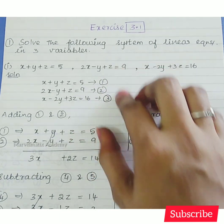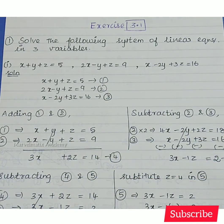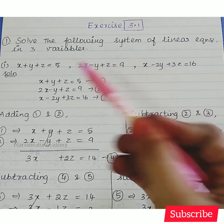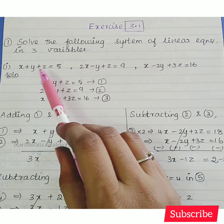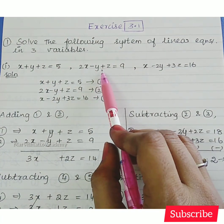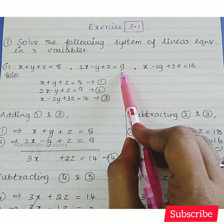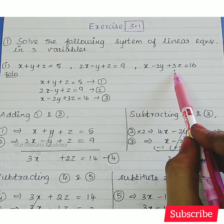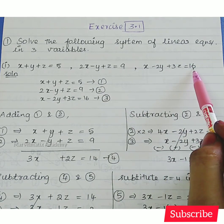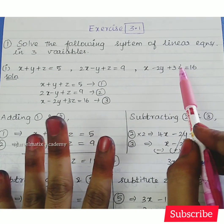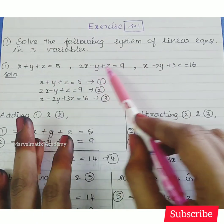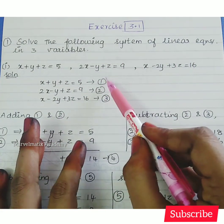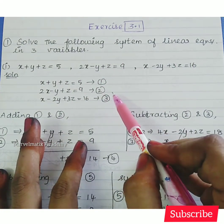Let's see the first question. The three equations are: x plus y plus z equals 5; 2x minus y plus z equals 9; x minus 2y plus 3z equals 16. These are equations 1, 2, and 3.